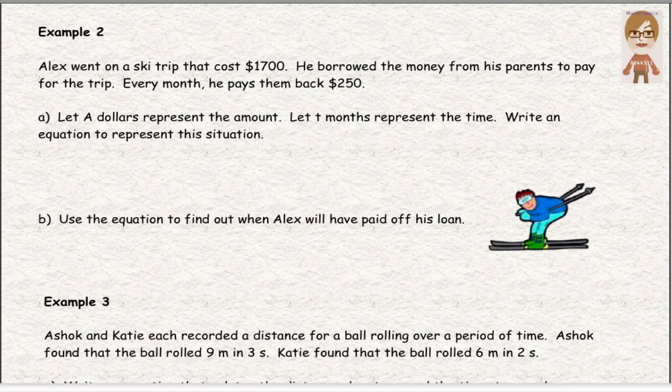Example 2: Alex went on a ski trip that cost $1,700. He borrowed the money from his parents to pay for the trip. Every month, he pays back $250. Then it says, let A dollars represent the amount, and let T months represent the time. So write an equation to represent the situation. So they want you to use A and T, T months.